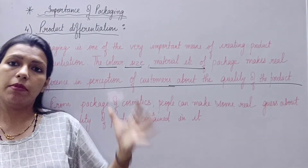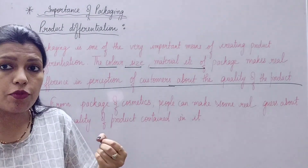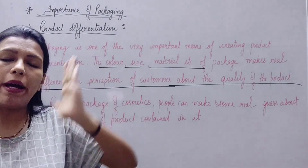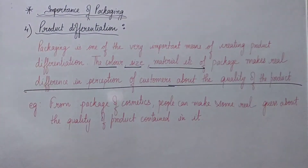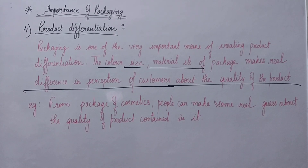To summarize: product differentiation means packaging material, color, and size influence your perception about the quality of the product. Solid packaging means the perception is that the quality is good. We have now covered the introduction of packaging, levels of packaging, and the importance of packaging. If you have any doubts, you can mark them in the comment box. Next class we will proceed with the topic of functions of packaging.